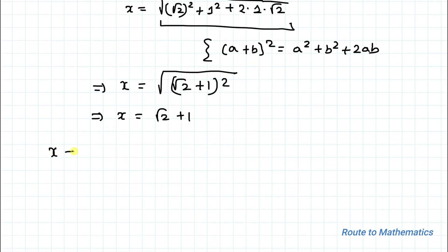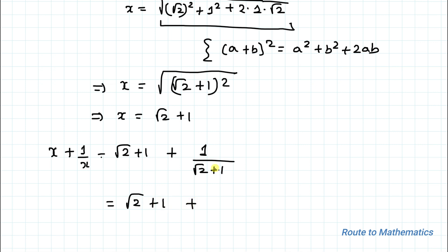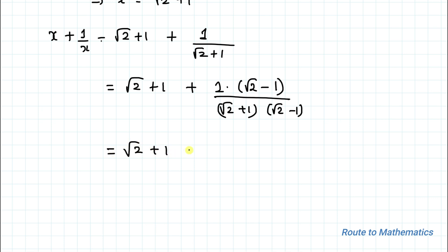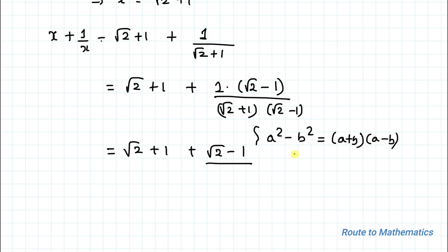Now let's find the value of x plus 1 by x, which equals root 2 plus 1 plus 1 divided by (root 2 plus 1). We need to rationalize since there is a radical in the denominator. Multiplying numerator and denominator by (root 2 minus 1) and applying the identity a² minus b² equals (a+b)(a-b), we get root 2 plus 1 plus (root 2 minus 1) divided by (2 minus 1). The plus 1 and minus 1 cancel out, giving us 2 root 2.